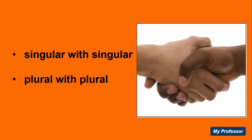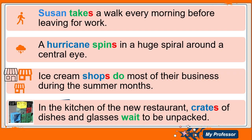Therefore, singular goes with singular — singular noun, singular verb — and plurals go with plural — plural nouns, plural verbs. Let's look at this example: 'Susan takes a walk every morning before leaving for work.' The subject is Susan — one, singular. The verb is 'takes,' so we add an S to the verb because the subject is singular.